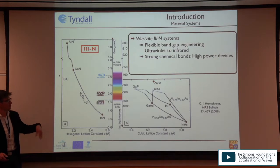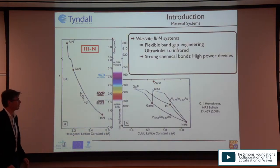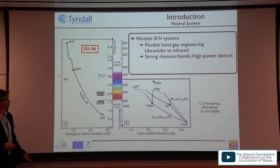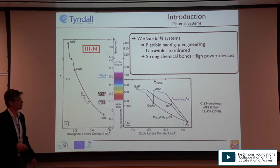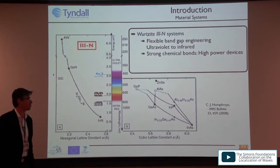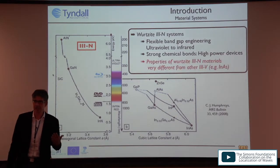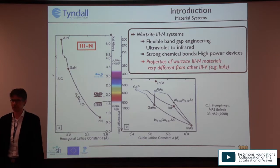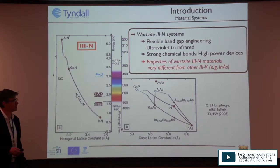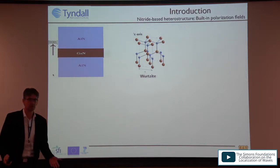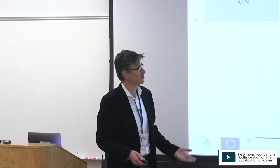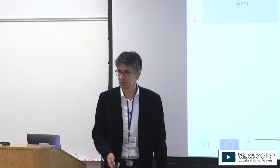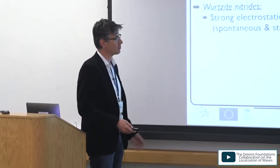I will briefly bring up why nitrides are interesting, since this is a broad audience. In principle you can cover a very wide emission wavelength range with three materials: indium nitride, gallium nitride, and aluminum nitride. Their strong chemical bonds make them very interesting for high power devices. However, these systems are very different from what we know from other III-V materials like indium arsenide and gallium arsenide, starting with the underlying crystal structure.